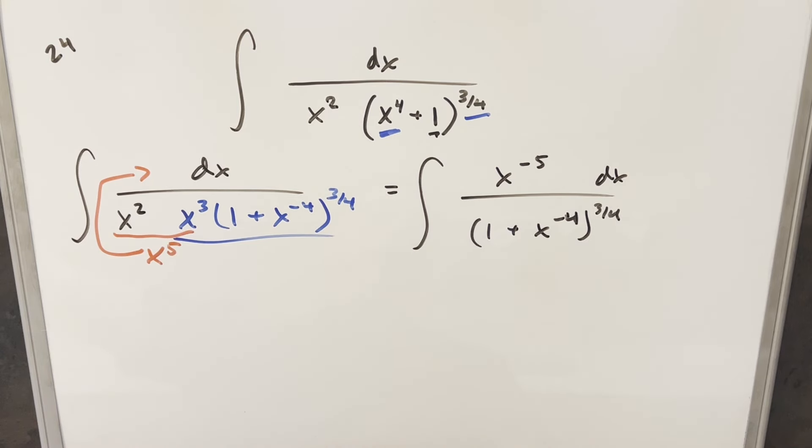And then at this point, we're actually in pretty good shape for a u-substitution. Just notice we've got the power here minus 4, the power here is minus 5, so when we do our u-substitution, we take a derivative, minus 4, minus 1 gets me this minus 5.